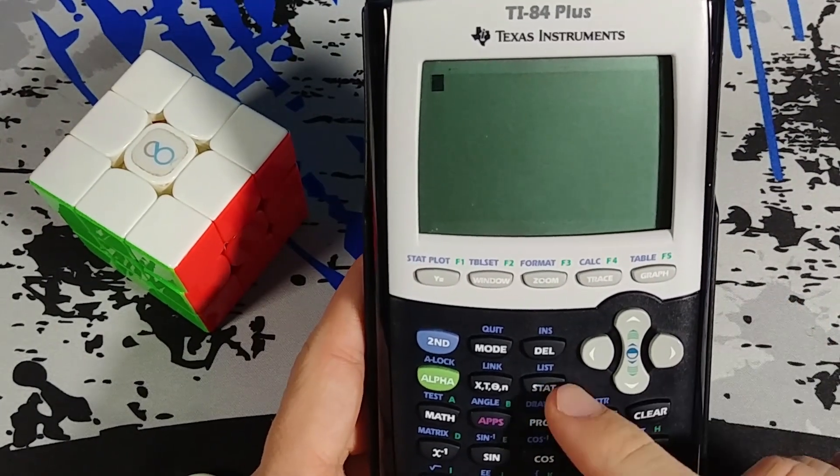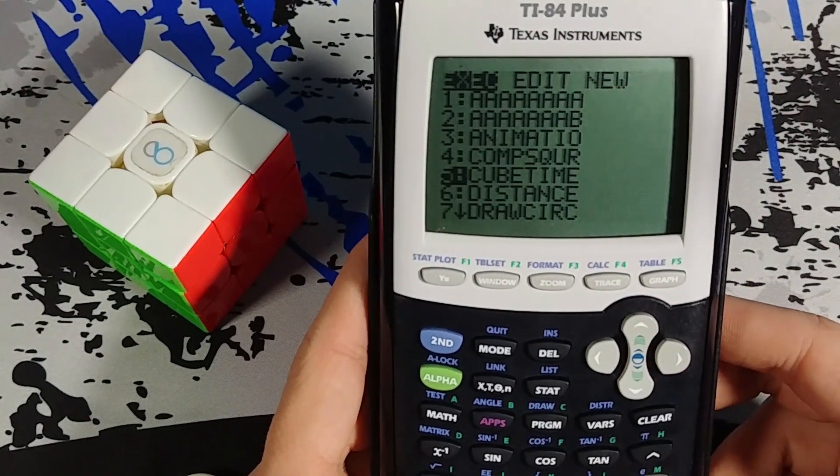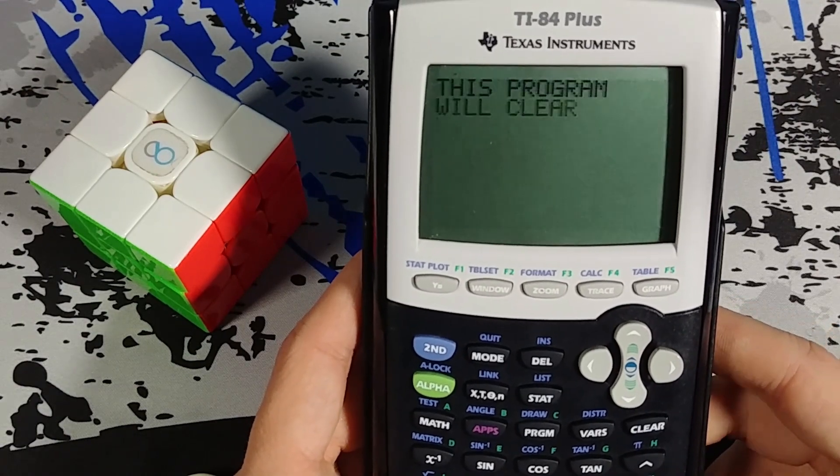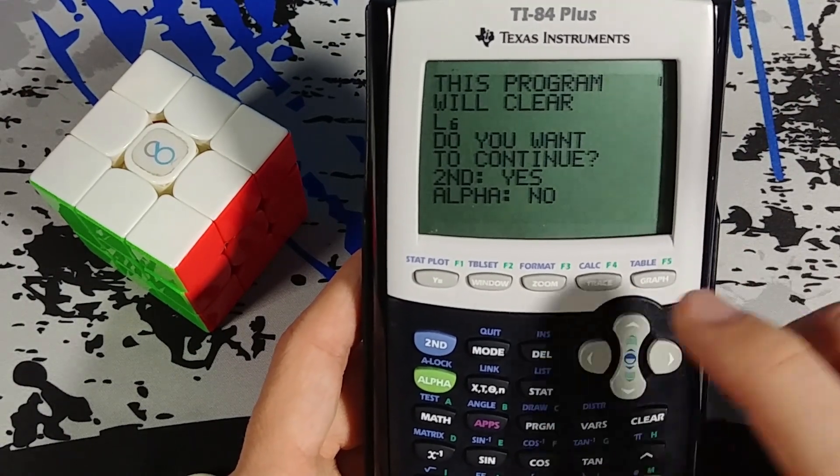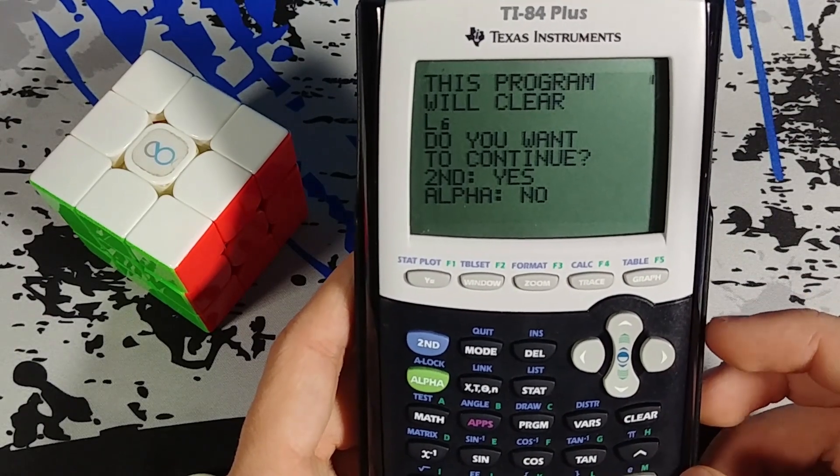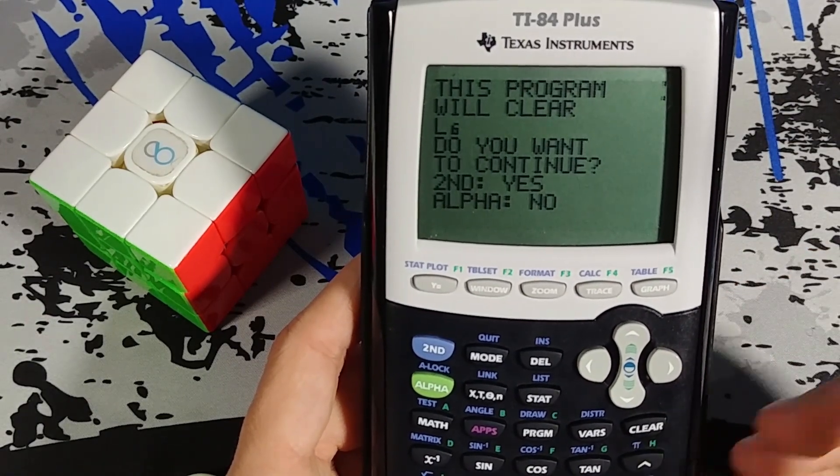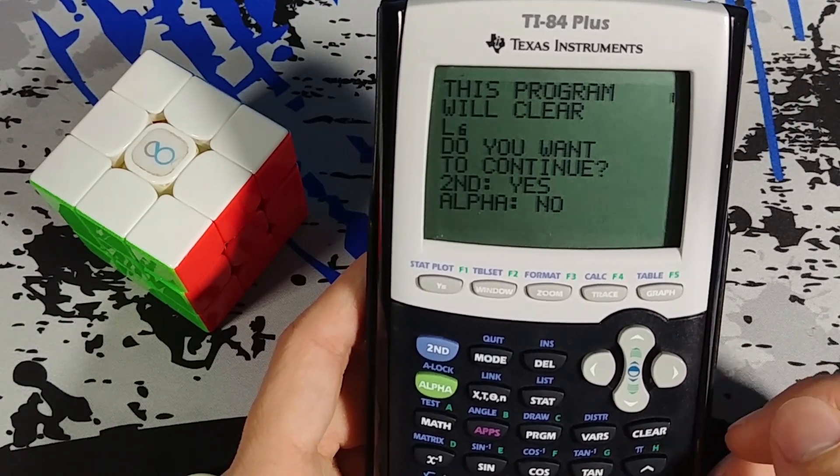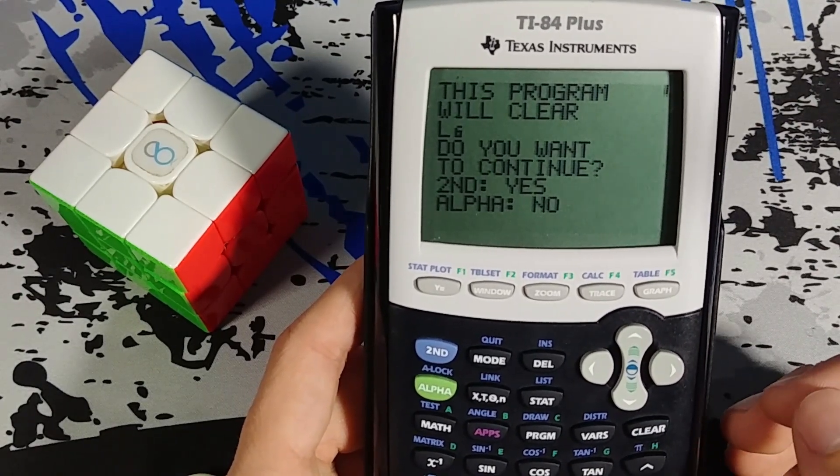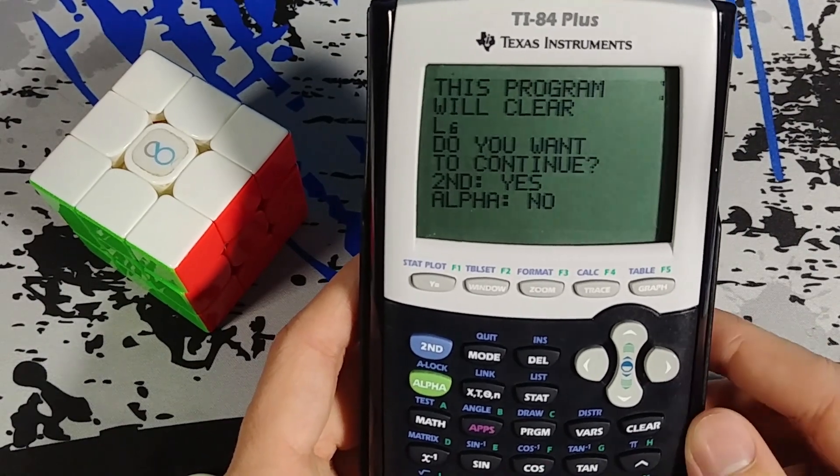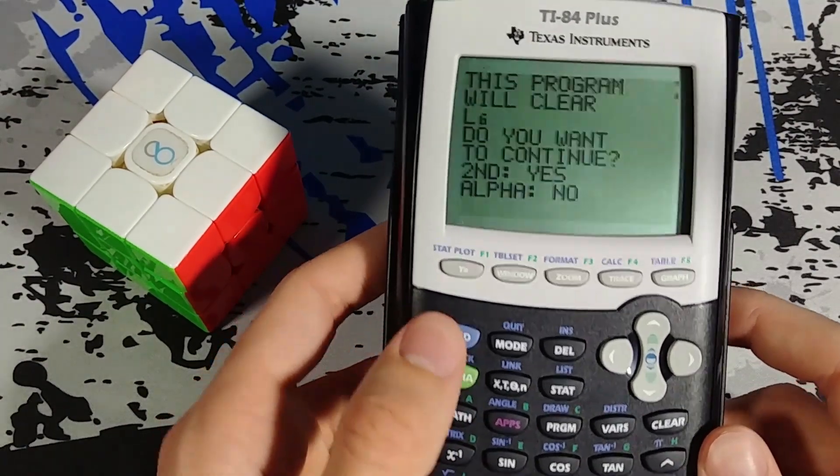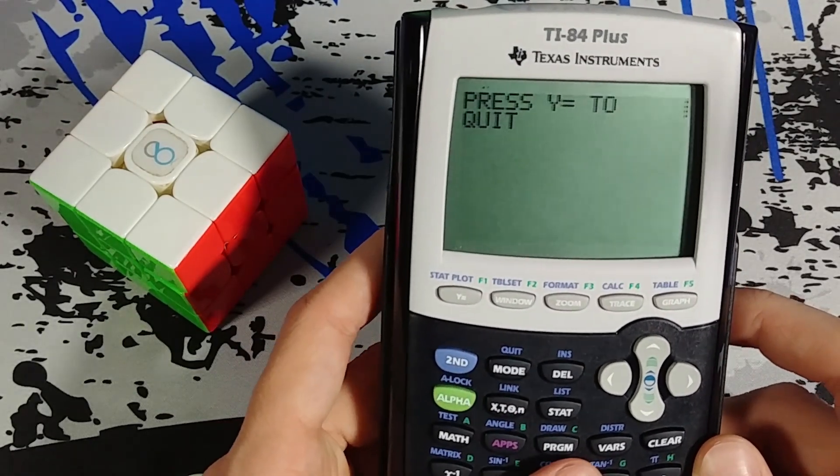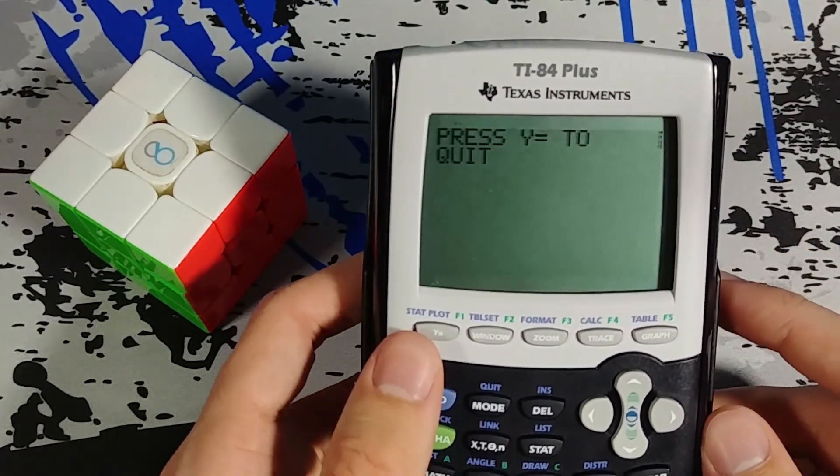First I'm going to go under my program button and it's called cube time. So let's start it up. First it's going to tell me that it's going to clear list 6, which is basically if you have a graphing calculator you can store different lists. This is asking me because if I have information stored in there that's important I don't want to get rid of that. But I don't have any important information in there so I'm going to hit second to continue. And then it's going to let me know that at any time during the program I can hit y equals to quit.